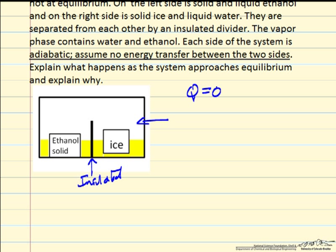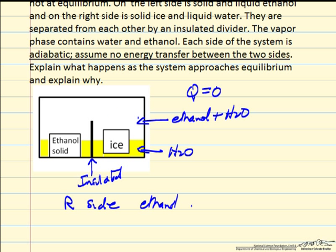If we look here, we have ethanol plus water in the vapor phase. And only water in the liquid phase, then the fugacity of ethanol is higher here than here. So on the right side, ethanol must condense.